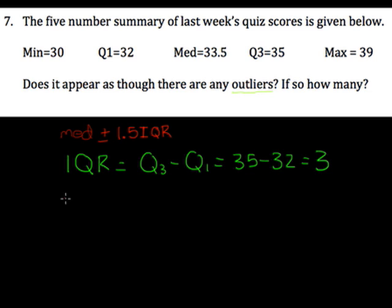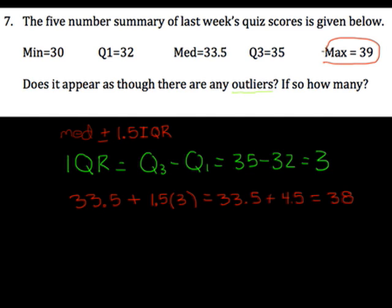So if we're checking for outliers, we're going to do the median, 33.5 plus 1.5 times the IQR, which is 3. And that ends up being 33.5 plus 4.5. If I add 4.5, that means that 38 is our cutoff for outliers. Well, look at our max up here. Our max is 39. That's bigger than 38, so it does appear as though we have at least one outlier, if not more.